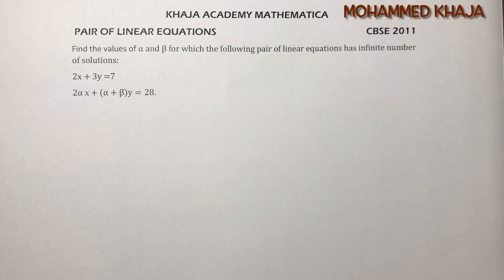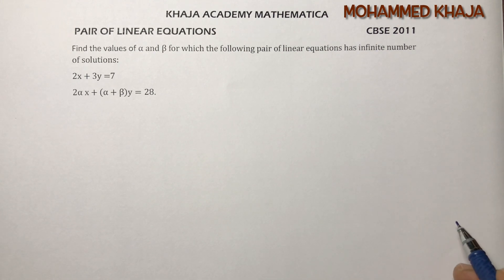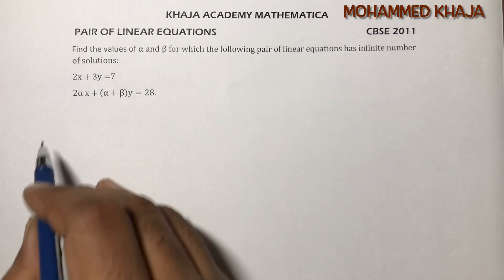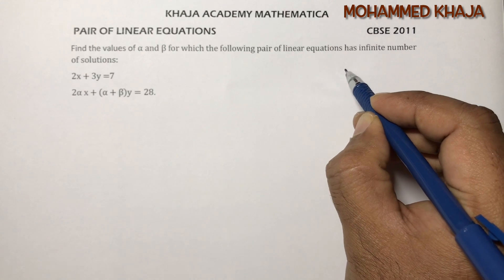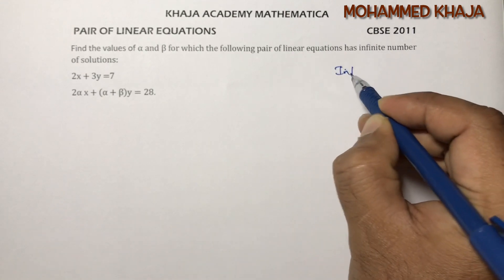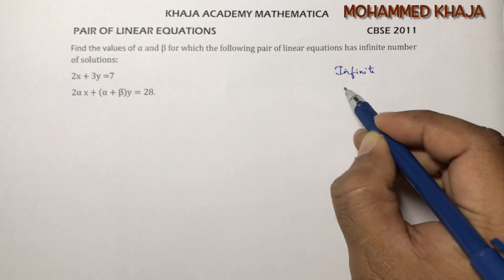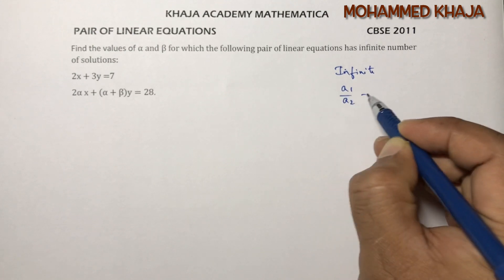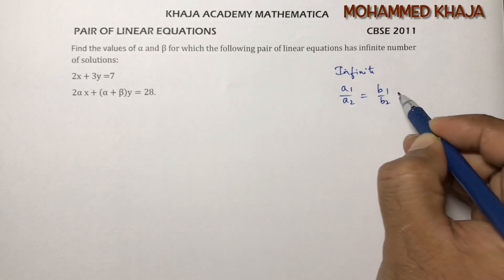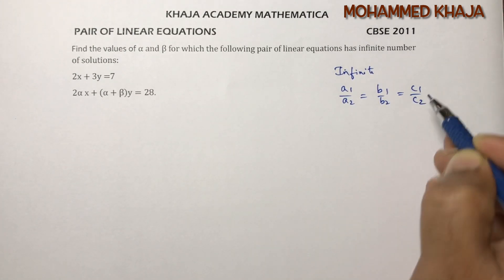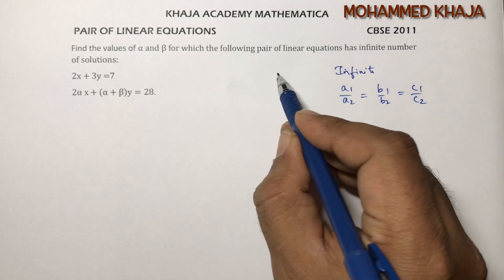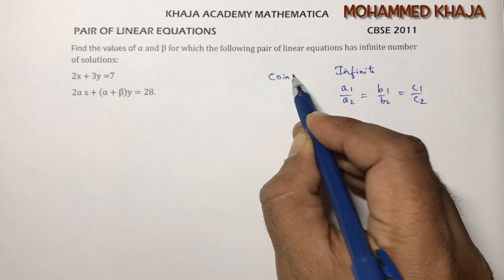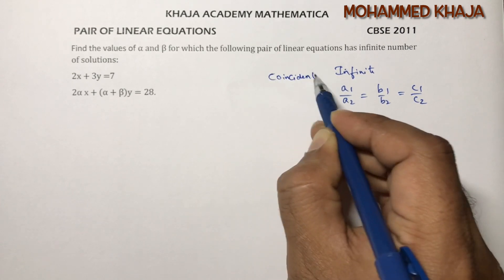Find the values of alpha and beta for which the following pair of linear equations has an infinite number of solutions. For infinite solutions, the condition is a1/a2 = b1/b2 = c1/c2. This is the condition for infinite solutions because the lines are coincident.